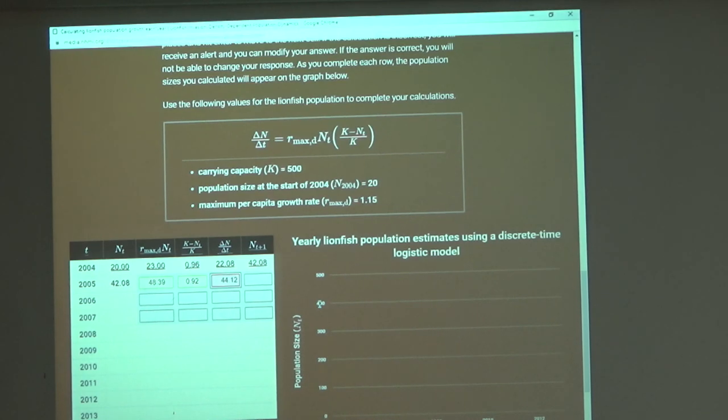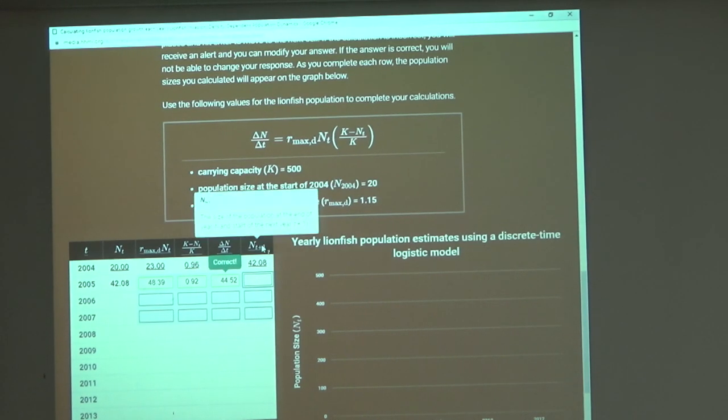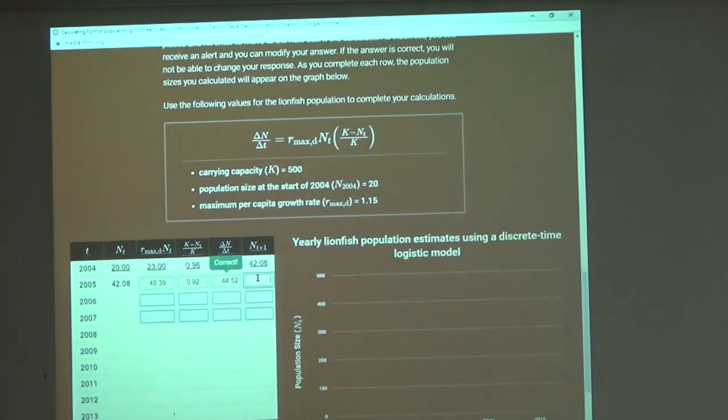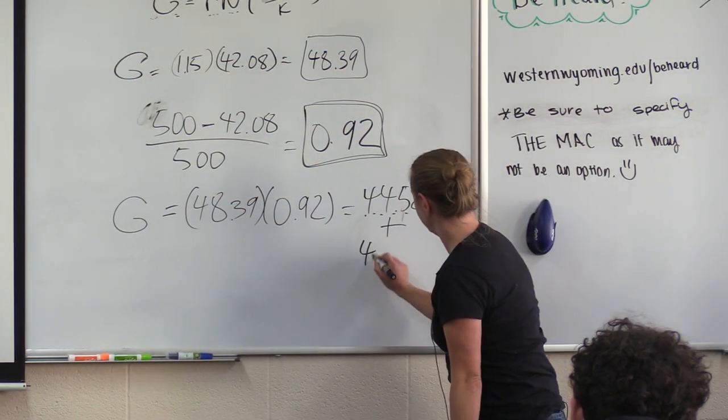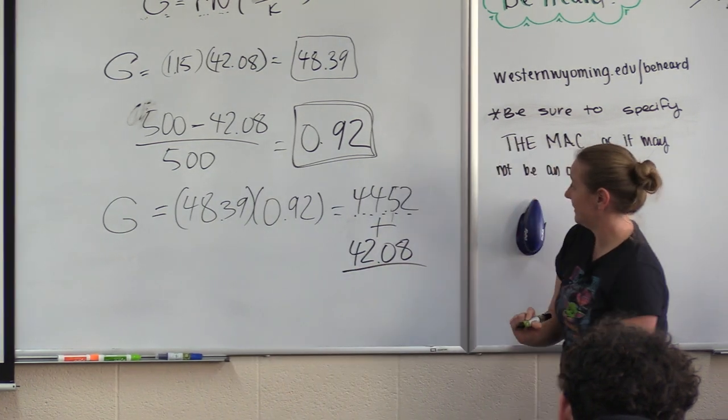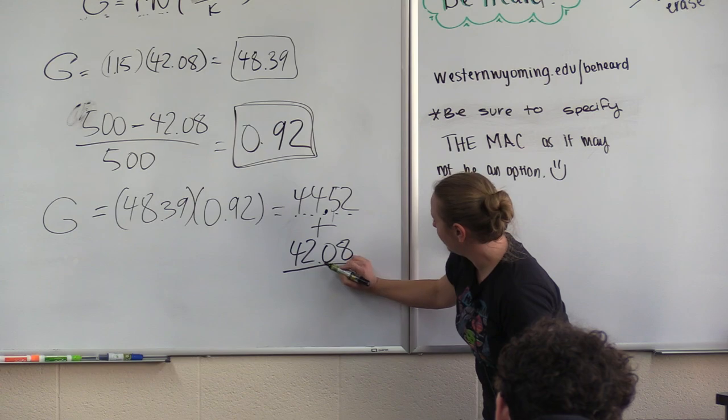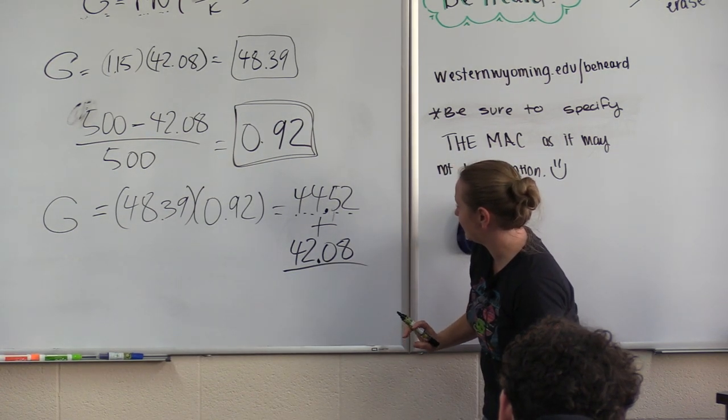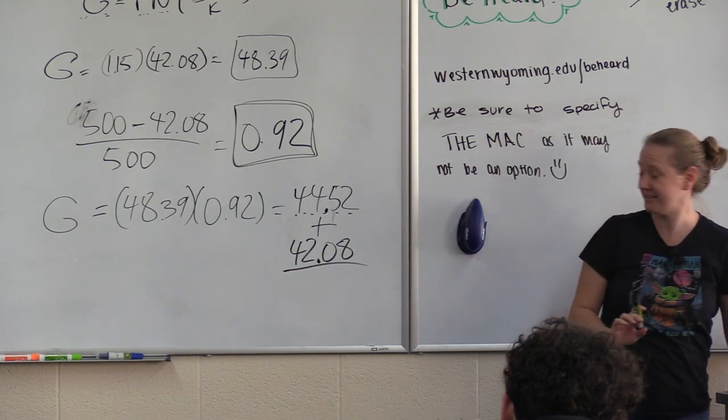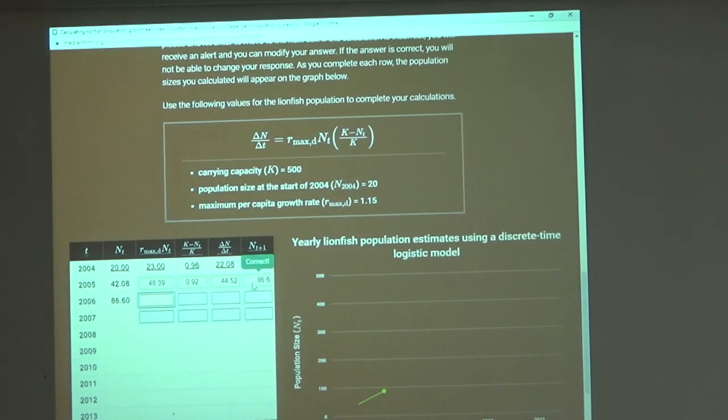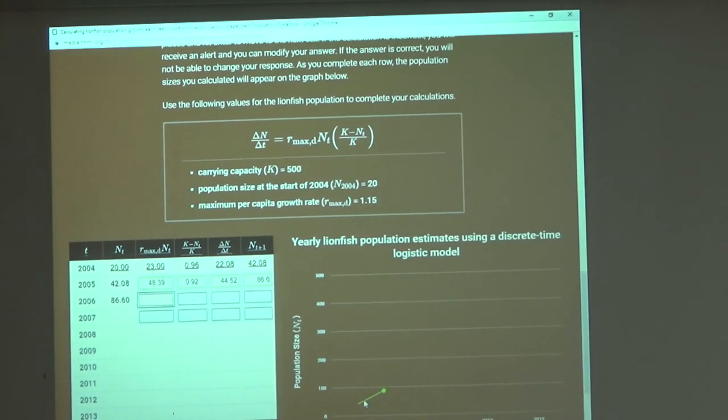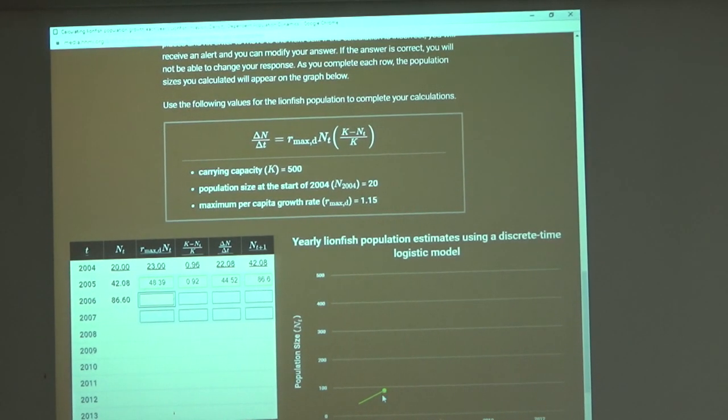Because guess what? It would have told you it was wrong, which is nice. You get immediate feedback, which I love. So now to find out my n, my population growth at the end of this unit of time and the beginning of the next, I have to add what I added to what I had at the beginning. So 44.52 plus 42.08. I should be able to do this one in my head. 86.6? Oh, thank you. And in fact it is. So if you are following along on the graph you will now see that there's a new data point here that is populated.